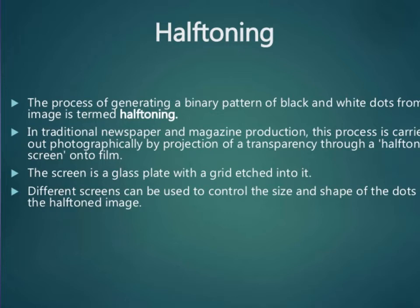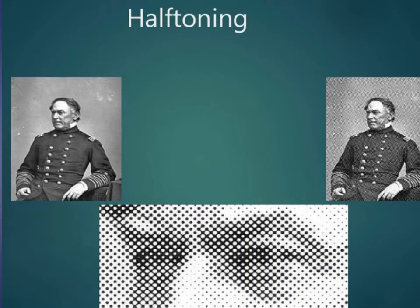The process of generating a binary pattern of black and white dots from an image is termed half-toning. Continuous tone photographs are reproduced for publication in newspapers, magazines, and books using a printing process called half-toning, and the reproduced pictures are called half-tones. For a black and white photograph, each intensity area is reproduced as a series of black circles on a white background. The diameter of each circle is proportional to the darkness required — darker regions are printed with larger circles and lighter regions with smaller circles.